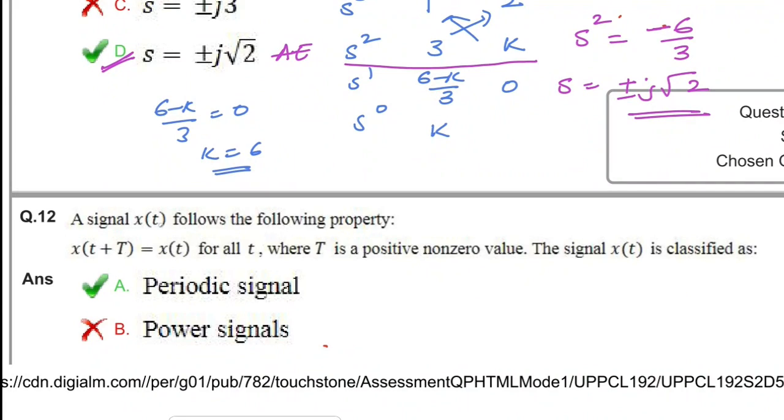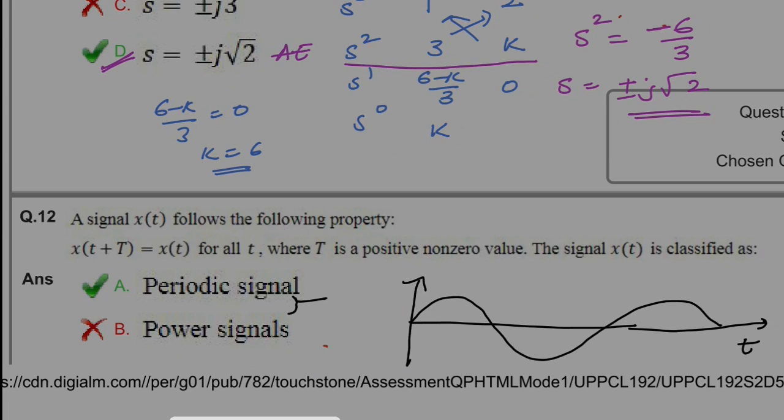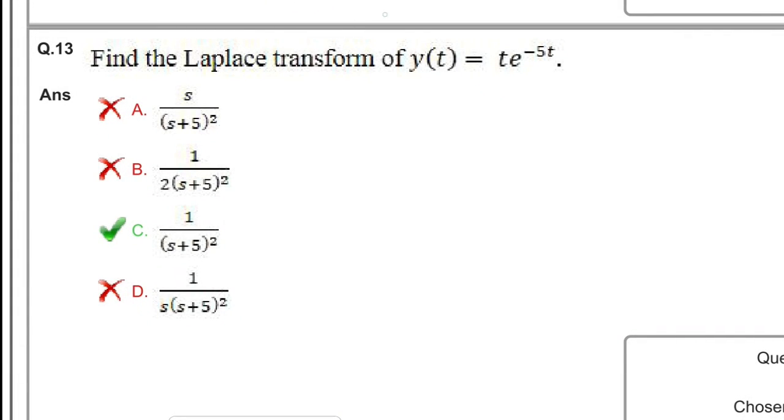The next question: a signal x(t) follows the following property: x(t + T) = x(t) for all values of t, where T is a positive non-zero value. The signal x(t) is classified as periodic. You can cross check with any periodic signal, for example a sinusoidal, which repeats for every time period T.